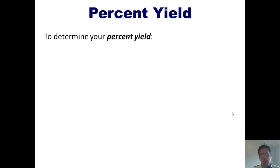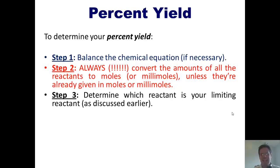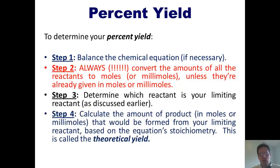To determine your percent yield: one, balance the chemical equation; two, convert everything to moles or millimoles; three, determine which reactant is your limiting reagent or reactant, as we just discussed. Four, calculate the amount of product that would be formed from your limiting reactant based on the equation stoichiometry. This amount is called the theoretical yield. I have to emphasize once again, once you've done step three and determined what your limiting reactant is, everything is calculated from your limiting reactant. Everything. Limiting reactant is the important guy.